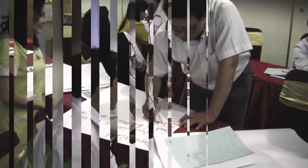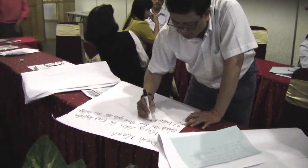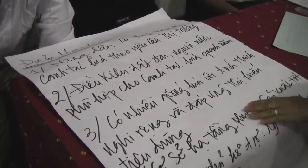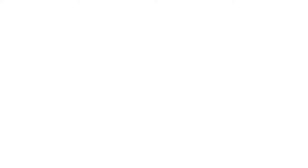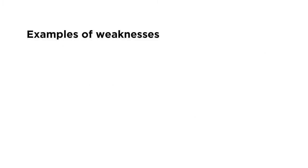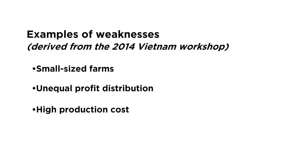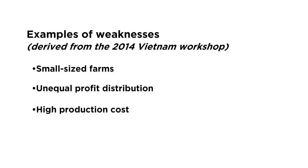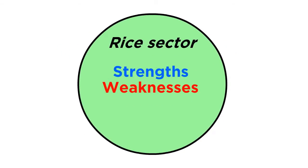Next, participants are divided into smaller groups of five to six persons each to discuss and list down the strengths and weaknesses of the rice sector as it pertains to its sustainability. By strength, we pertain to characteristics of the rice sector that give it an advantage over other competitors. By weakness, we pertain to characteristics that place the rice sector at a disadvantage relative to other competitors. Strengths and weaknesses are internal to the rice sector and can be controlled.